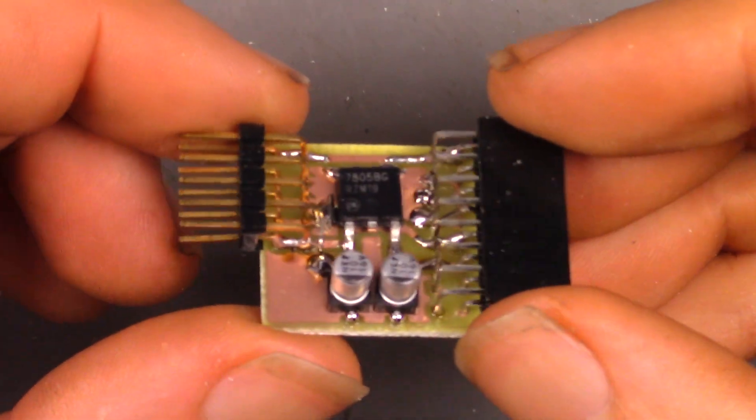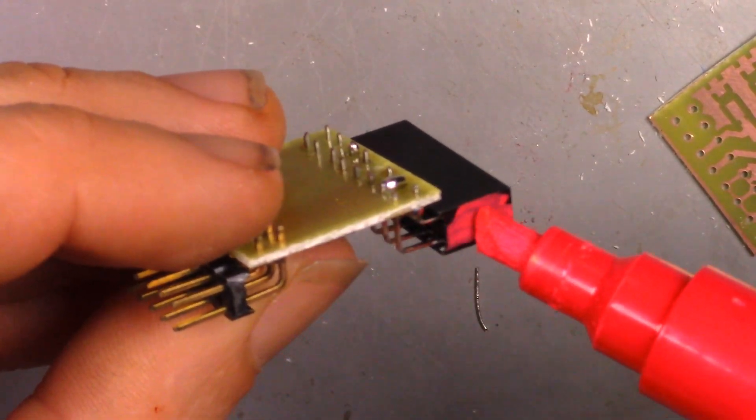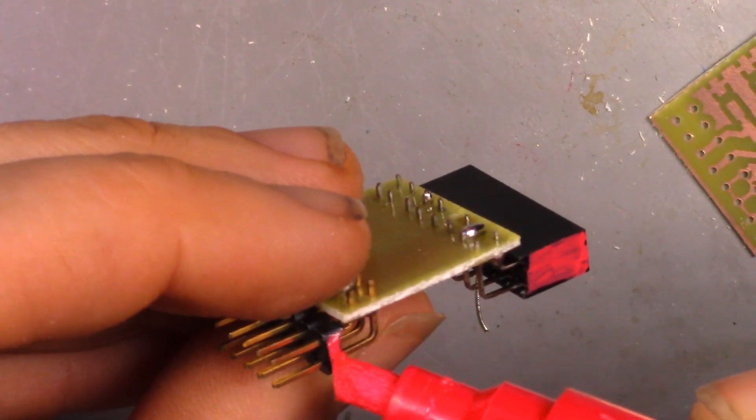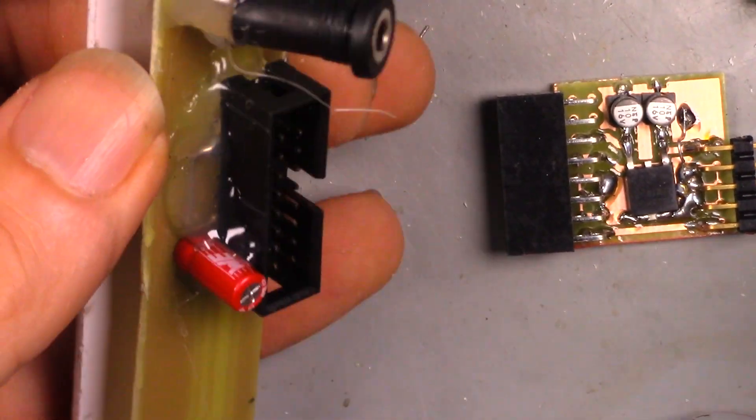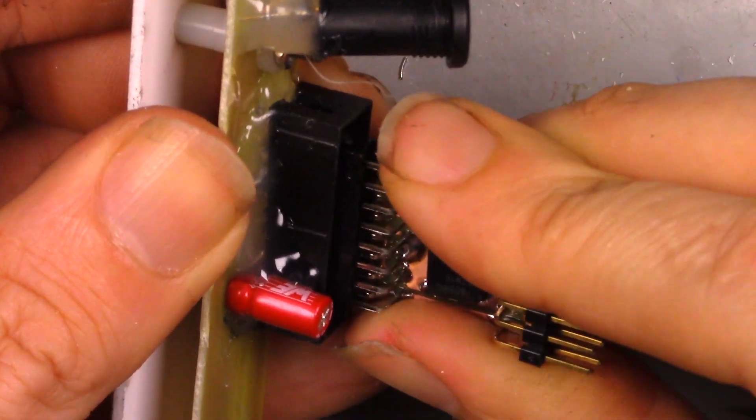And there we have it. All it's left to do is add a red mark to the negative 12 side. Give it a quick off camera power on test. And then connect it to a module. And there we go. 5 volts for a module that doesn't have it built in.